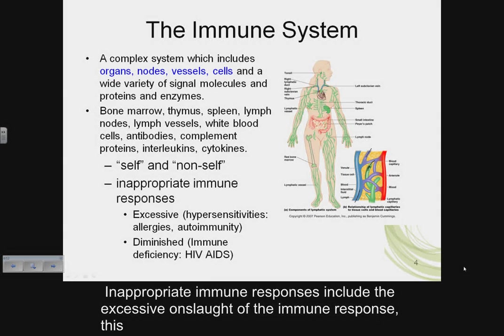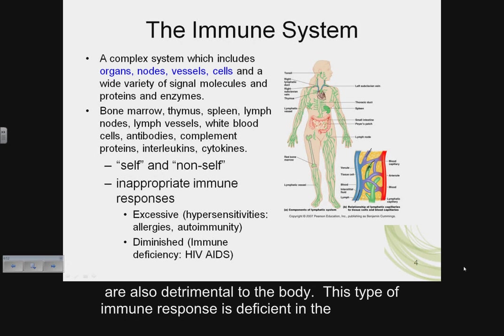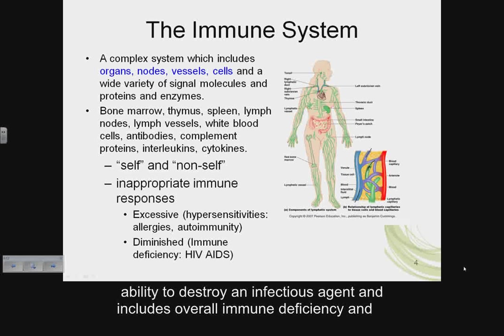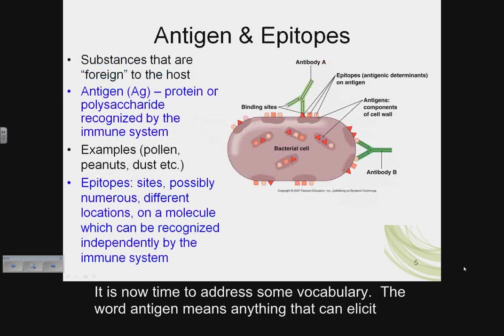The immune system must elicit an appropriate immune response against invading antigens. Inappropriate immune responses include hypersensitivities, allergies, or autoimmunity. Diminished immune responses are also detrimental to the body — this type of response is deficient in the ability to destroy an infectious agent and includes overall immune deficiency and AIDS.